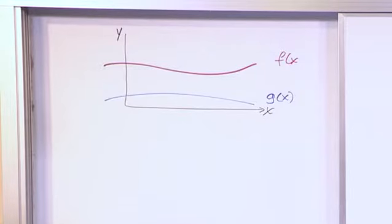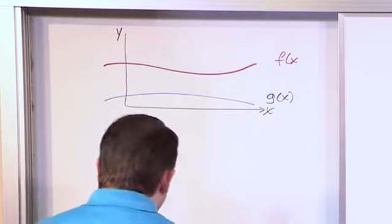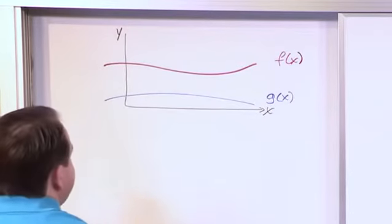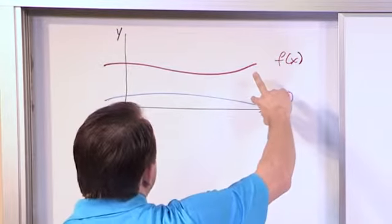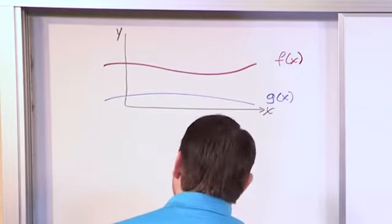Now what we're trying to do with the washer method, you really only use it when you have two functions. And you're revolving both of them around the x-axis. So what do you think is going to happen if you do that? Then you're going to basically have a situation where you revolve both of them around the axis. So what's going to happen then?